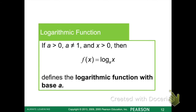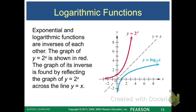First of all, let's define a logarithmic function with base a. a has to be greater than 0, it can't be 1, and x has to also be greater than 0. Log functions are just inverses of exponential functions of the same base. So here I have the red exponential function y equals 2 to the x, so that's base 2. I have that graphed, and in blue, I have y equals log base 2 of x. So we see that they're inverses because they reflect across the line y equals x.